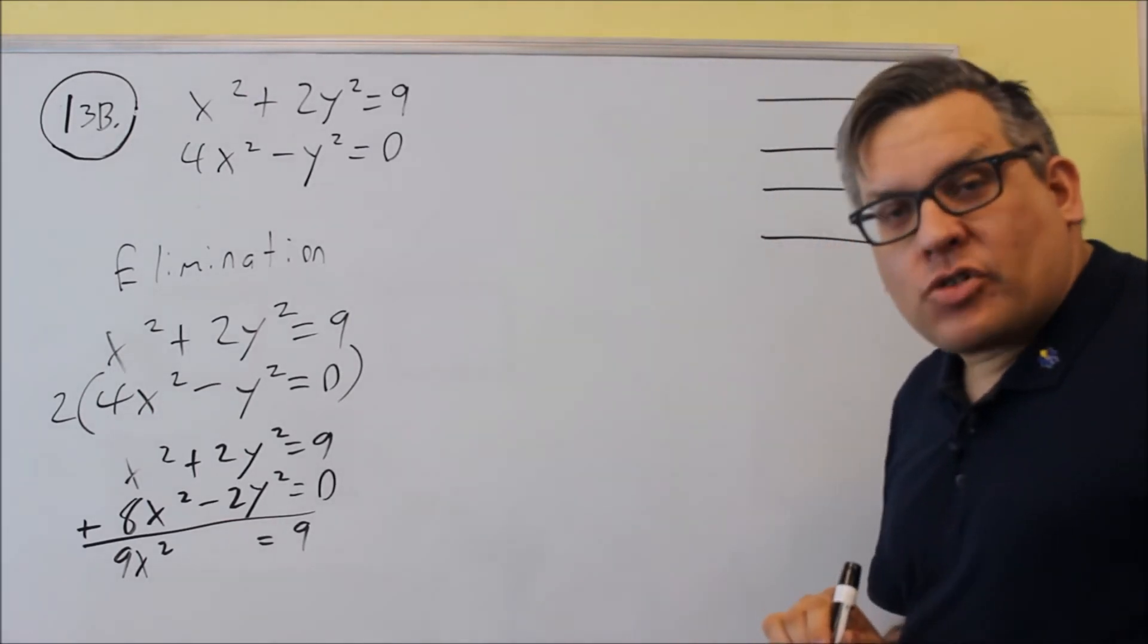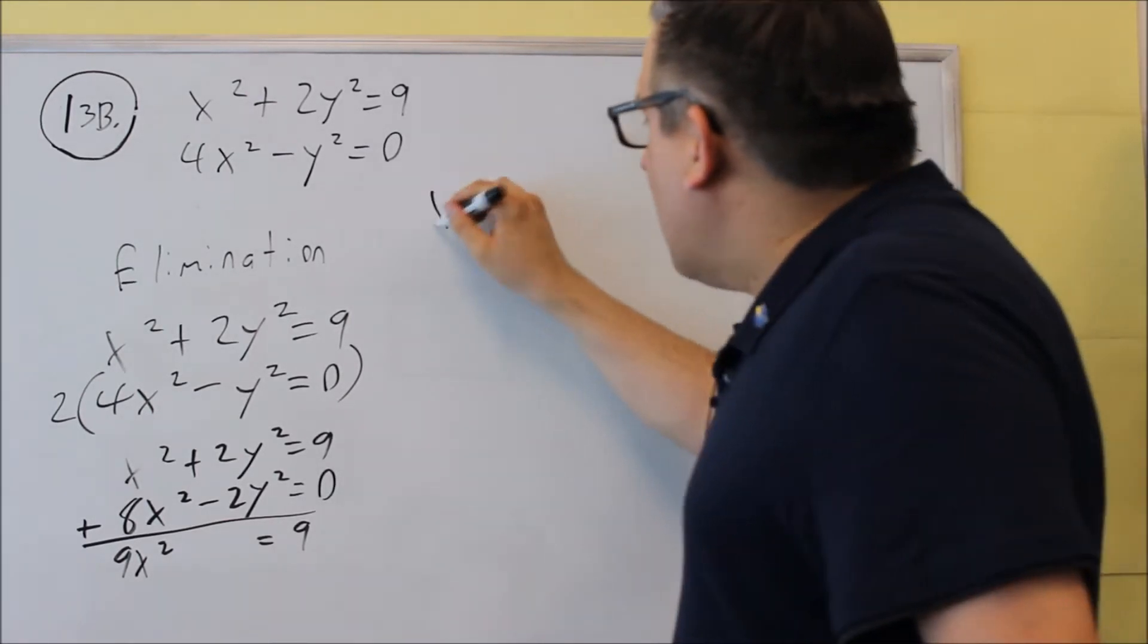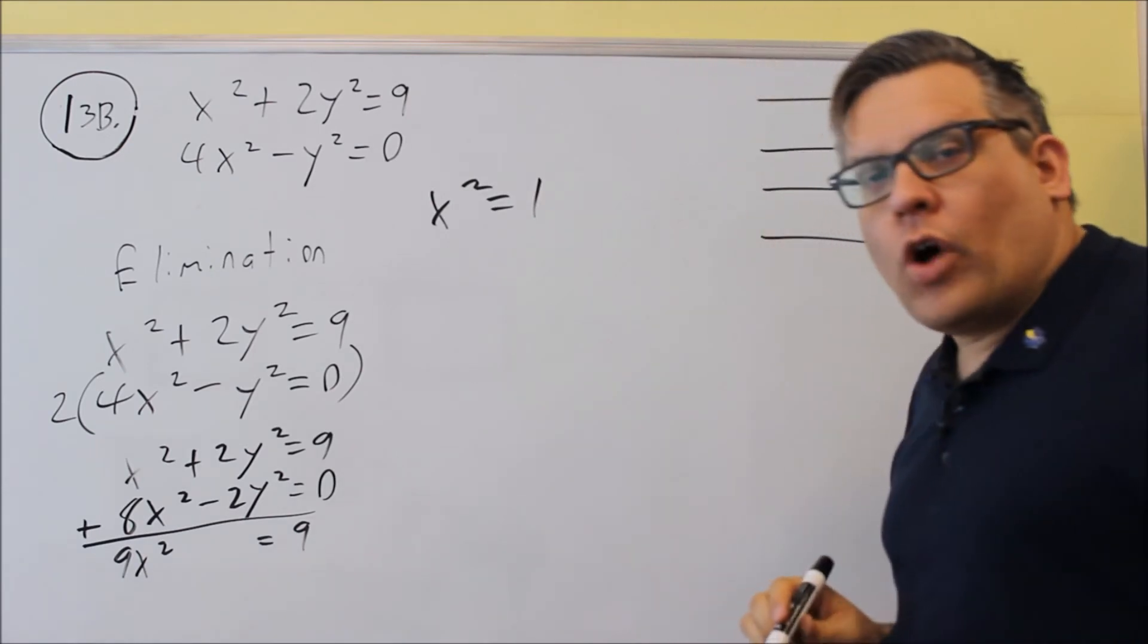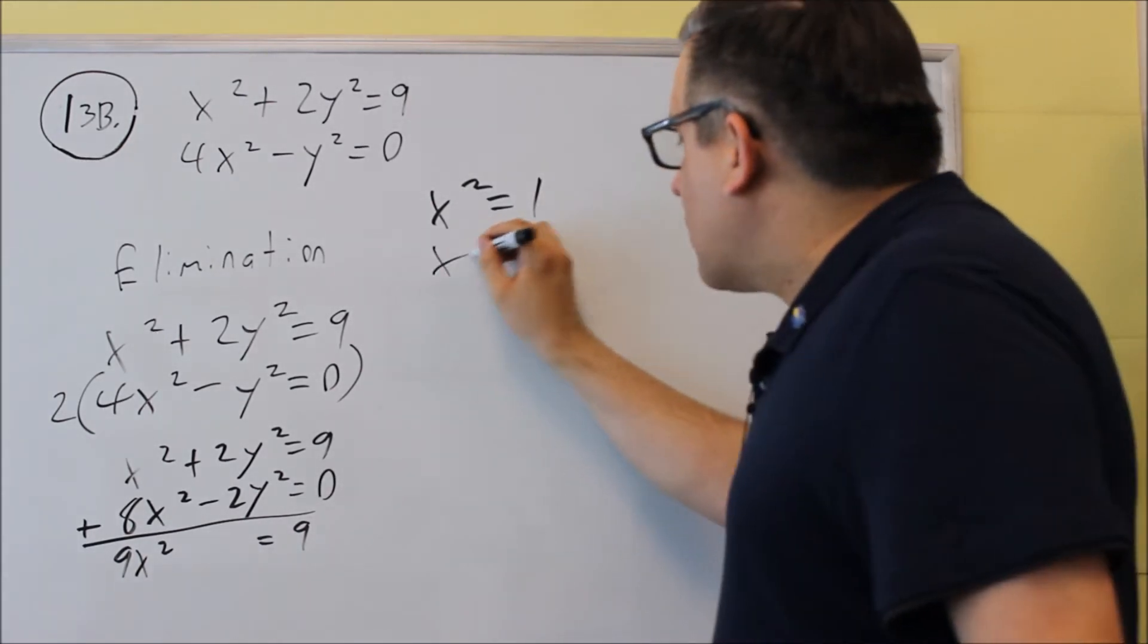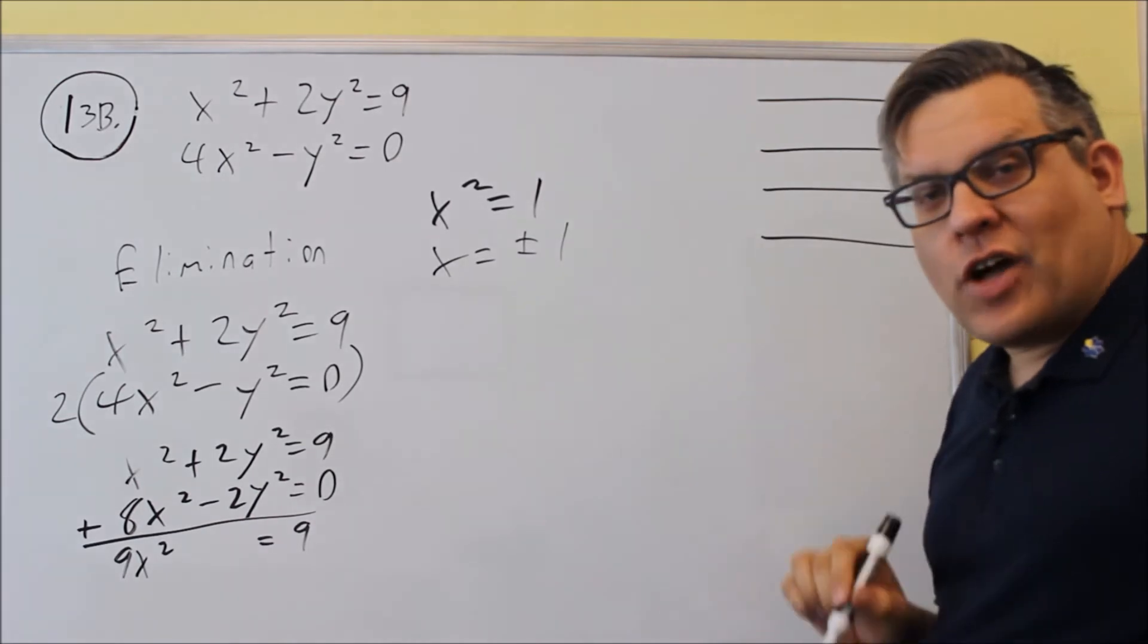At this point, I'm going to divide both sides of the equation by nine and I get x squared is equal to one. And then when I square root both sides, I get plus or minus one for my x value.